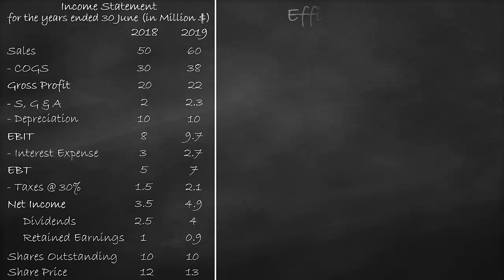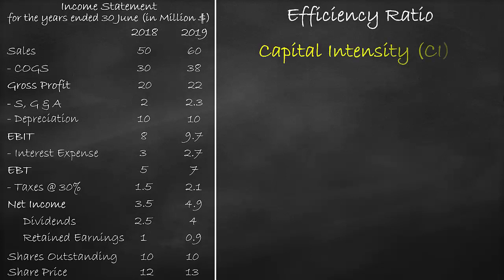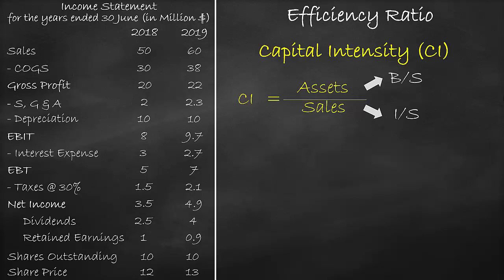An example of the efficiency ratio is the capital intensity ratio. The capital intensity formula is assets divided by sales. We get assets from the balance sheet and we get sales from the income statement. Please note that the income statement is a flow account, which means it is calculated over a year, while a balance sheet is a stock account, which is calculated on a certain day.